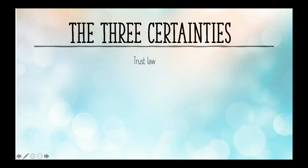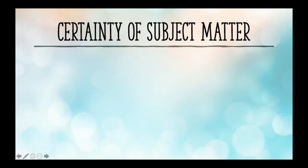Today we're going to be talking about the three certainties required to create an express trust in trust law. More specifically, we're going to be learning about the certainty of subject matter. This requires that the identity of the assets is sufficiently certain and that the beneficial interest is clear in order to create this express trust. This is easier when the asset is transferred, as it is clear which asset must be held on trust. It is more difficult when the asset has not yet been transferred, as in the case of testamentary trusts, where there may be ambiguities in the will.